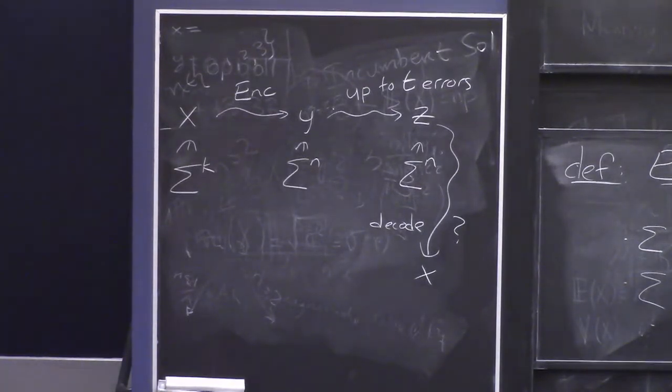We want to think about what makes a good error correcting code, an encoding function or a good set of code words, for the purposes of being able to do this last step: take a potentially corrupted code word and figure out, let's say, the Y that it came from, which will then allow us to deduce the X that Y came from.